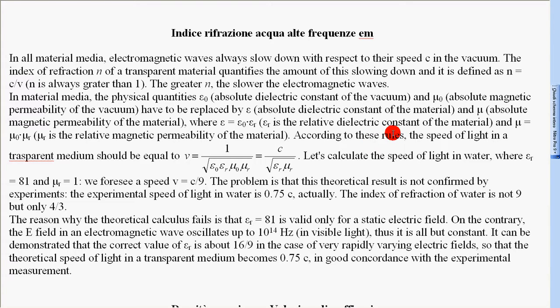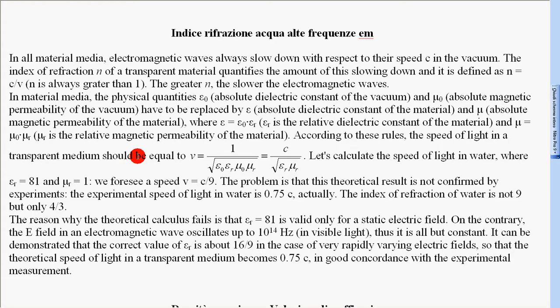According to these rules, the speed of light in a transparent medium should be equal to v equal to c divided by the square root of εr times μr. Let's calculate the speed of light in water, where εr is equal to 81 and μr is equal to 1.